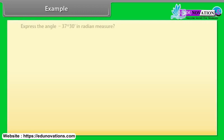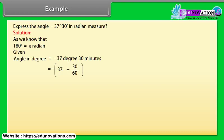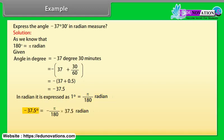Example: Express the angle −37° 30' in radian measure. Solution: Since 180° = π radians, and −37° 30' = −(37 + 30/60)° = −(37 + 0.5)° = −37.5°. In radians: 1° = π/180 radians, so −37.5° = −(π/180) × 37.5 = −π/24 radians.